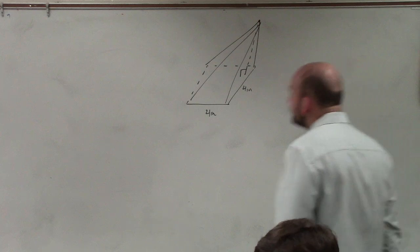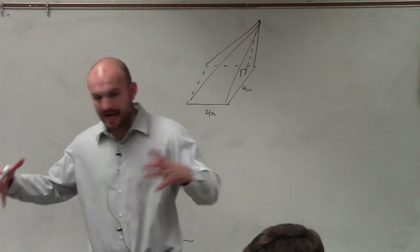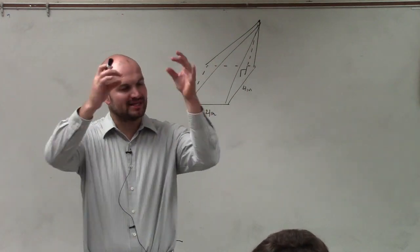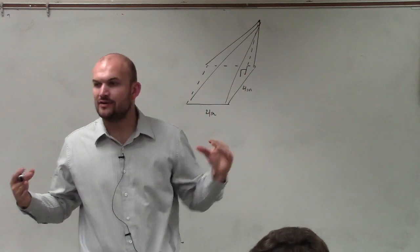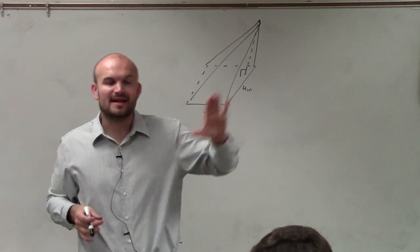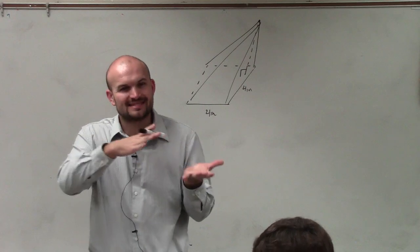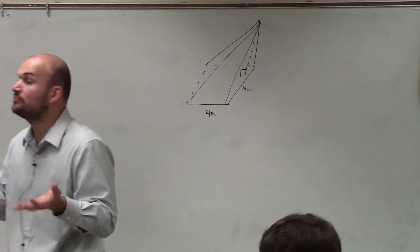An oblique pyramid, ladies and gentlemen, is very important because what you notice is not all the sides converge to one point that's in the center of the base. You can see they all converge to a point that's kind of off-centered. So it's kind of like a slanted pyramid, which we call an oblique pyramid.